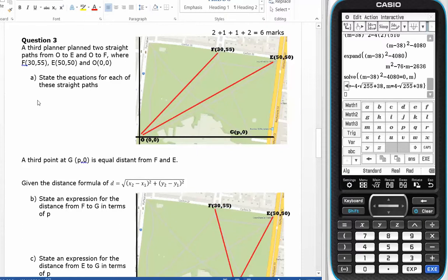But I can use the rule, which is y minus y1. And in y1, in this particular case, if I go from O to F, I'm going to call y1 zero.